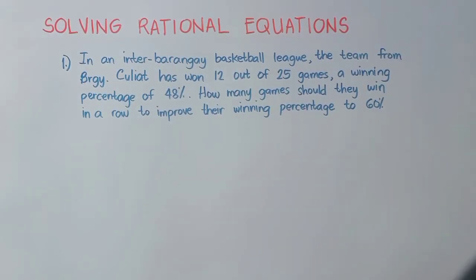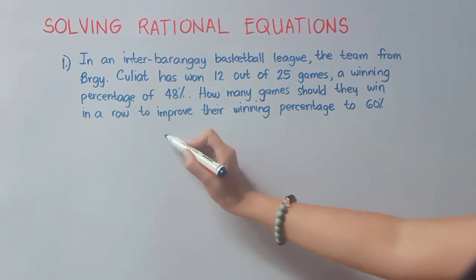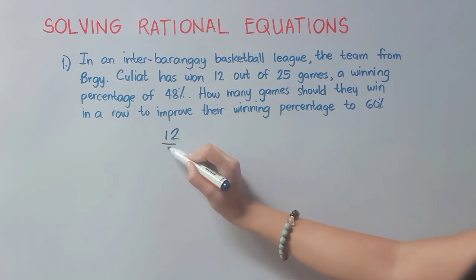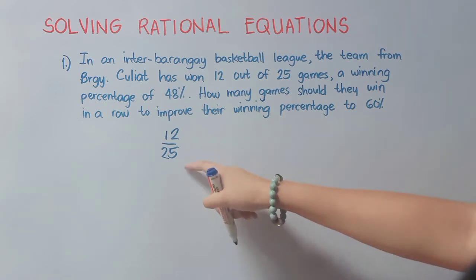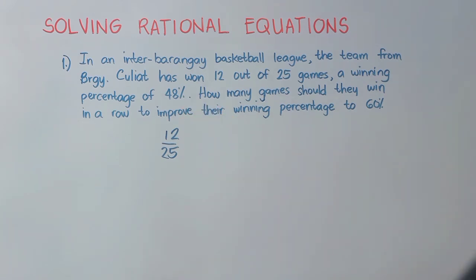Let's now proceed to word problems. In an Inter-Barangay Basketball League, the team from Barangay Culiat has won 12 out of 25 games — a winning percentage of 48%. How many games should they win in a row to improve their winning percentage to 60%?